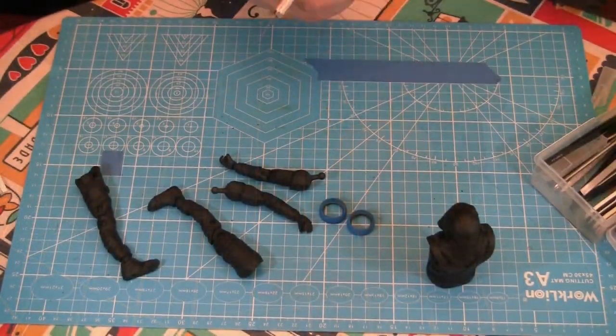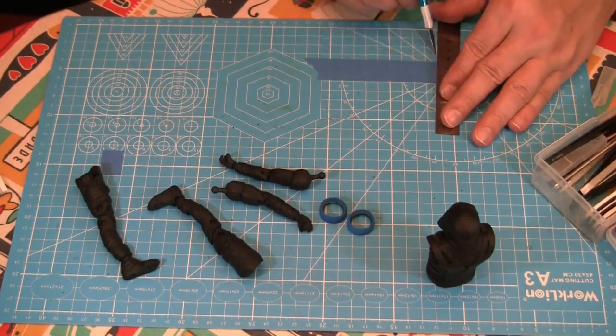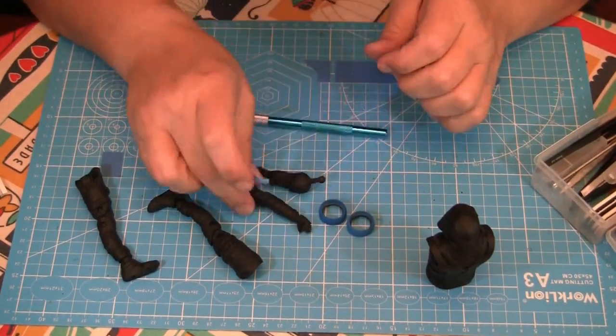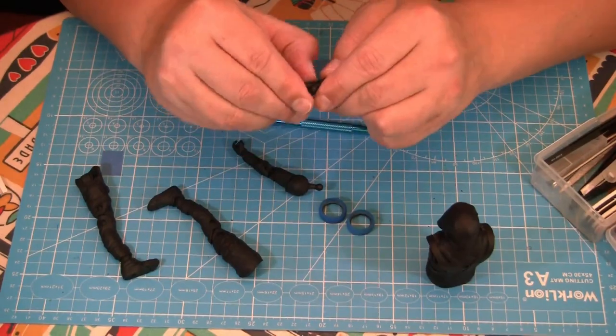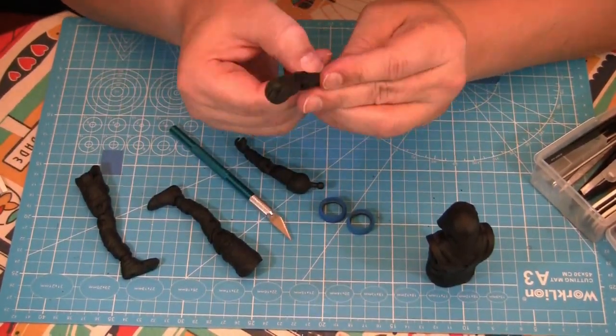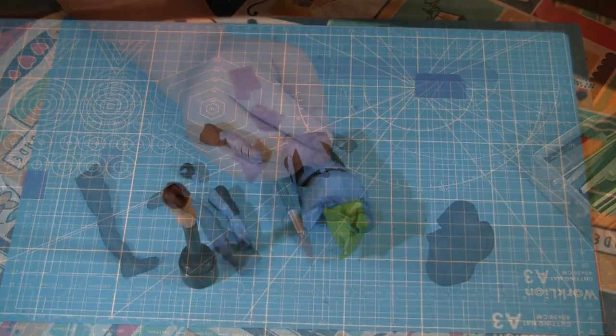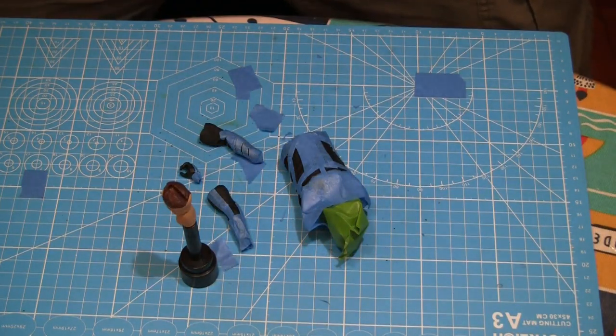Now what I've already done is airbrushed everything black. If you guys want to see more of the airbrushing process, let me know in the next videos. I'll try to add as much airbrushing as I can. Here I'm using small pieces of tape to mask everything up - it's a lot easier to use.